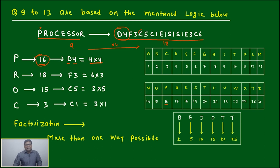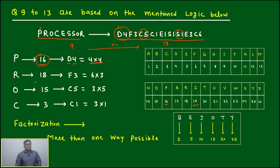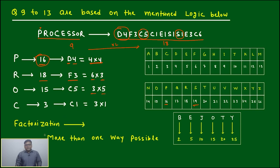Like C5 — you do 5 into 3 (C is 3). S1: S is 19, so 19 into 1 equals 19. Similarly, R is 18; it is represented as F3 — F is 6, and 6 into 3 is 18. Similarly, O is represented as C5 — C is 3, and 3 into 5 gives us 15.